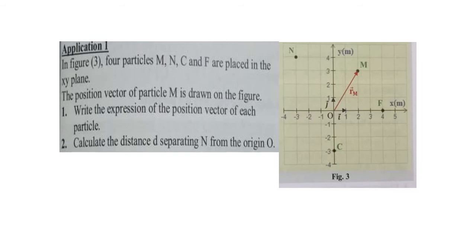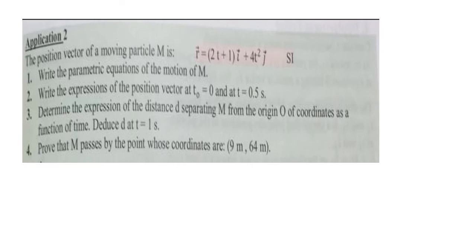Finally, solve this application. In application 2, you are given the position vector of a moving particle r equals (2t plus 1)i plus 4t squared j. In part 1, you are asked to write the parametric equations of the motion of m, that is, x in terms of t and y in terms of t. In part 2, you are asked to write the expressions of the position vectors at t equals 0 and t equals 0.5 seconds.